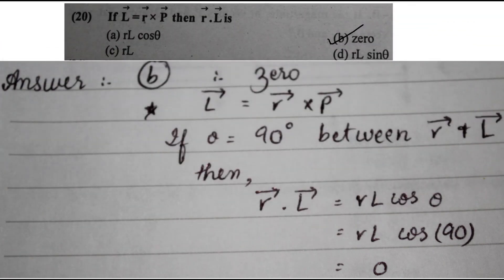Next question: if L equals r cross p, then what is r·L? Since L equals r × p, vector L is perpendicular to r, meaning the angle between r and L is 90 degrees. Applying the dot product formula r·L·cos θ with θ equals 90 degrees gives cos 90° equals 0, so r·L equals 0. Option B is the correct answer.